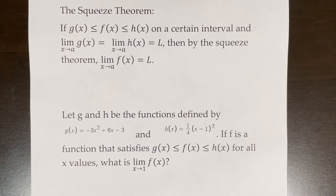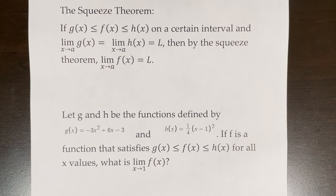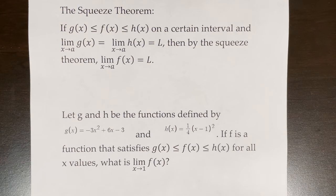The squeeze theorem states that if g(x) ≤ f(x) ≤ h(x) on a certain interval, and the limit of g(x) as x approaches a equals the limit of h(x) as x approaches a equals L, then by the squeeze theorem, the limit of f(x) as x approaches a is equal to L.